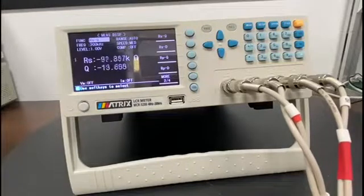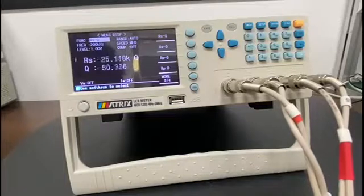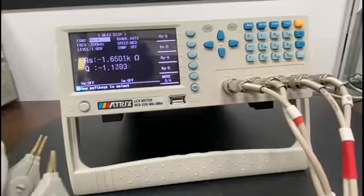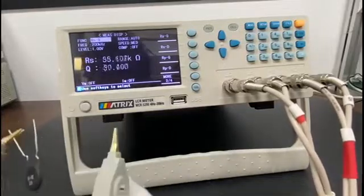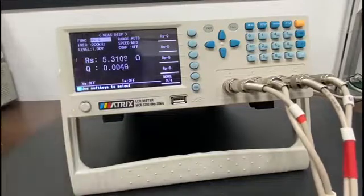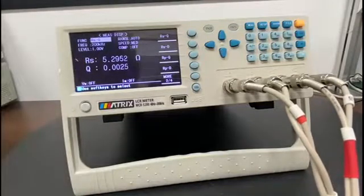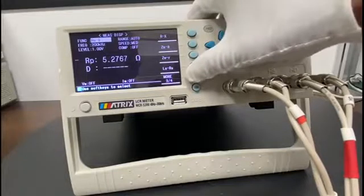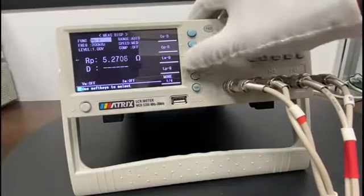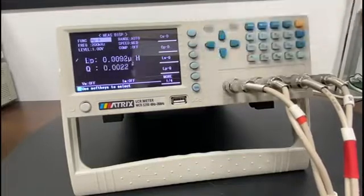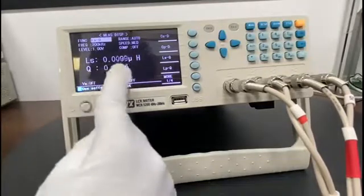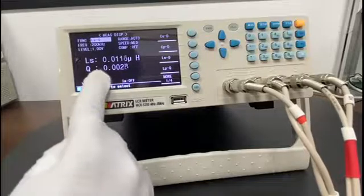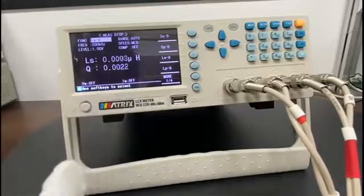Next we will measure one inductor. To measure inductance I will take one inductor and go to LS, inductance in series. Find LS and click this one. We can see the inductance of this inductor is 0.01 microhenries and the Q quality factor is 0.0024.